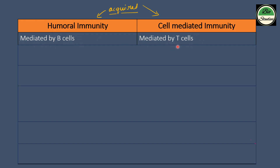B cells and T cells are the types of lymphocytes, and they are a type of WBC. B lymphocytes are involved in humoral immunity, while T lymphocytes help in cell-mediated immunity.